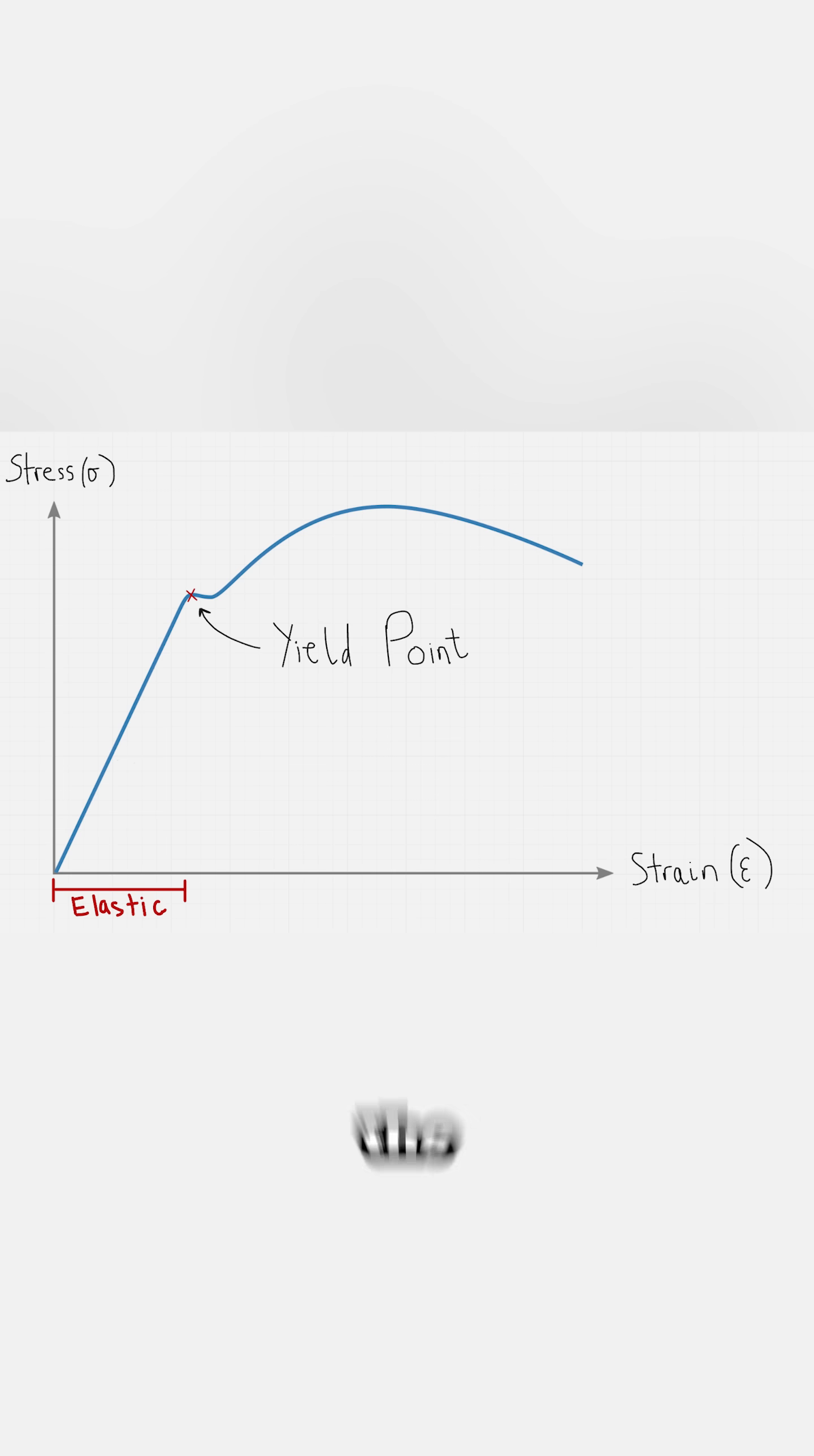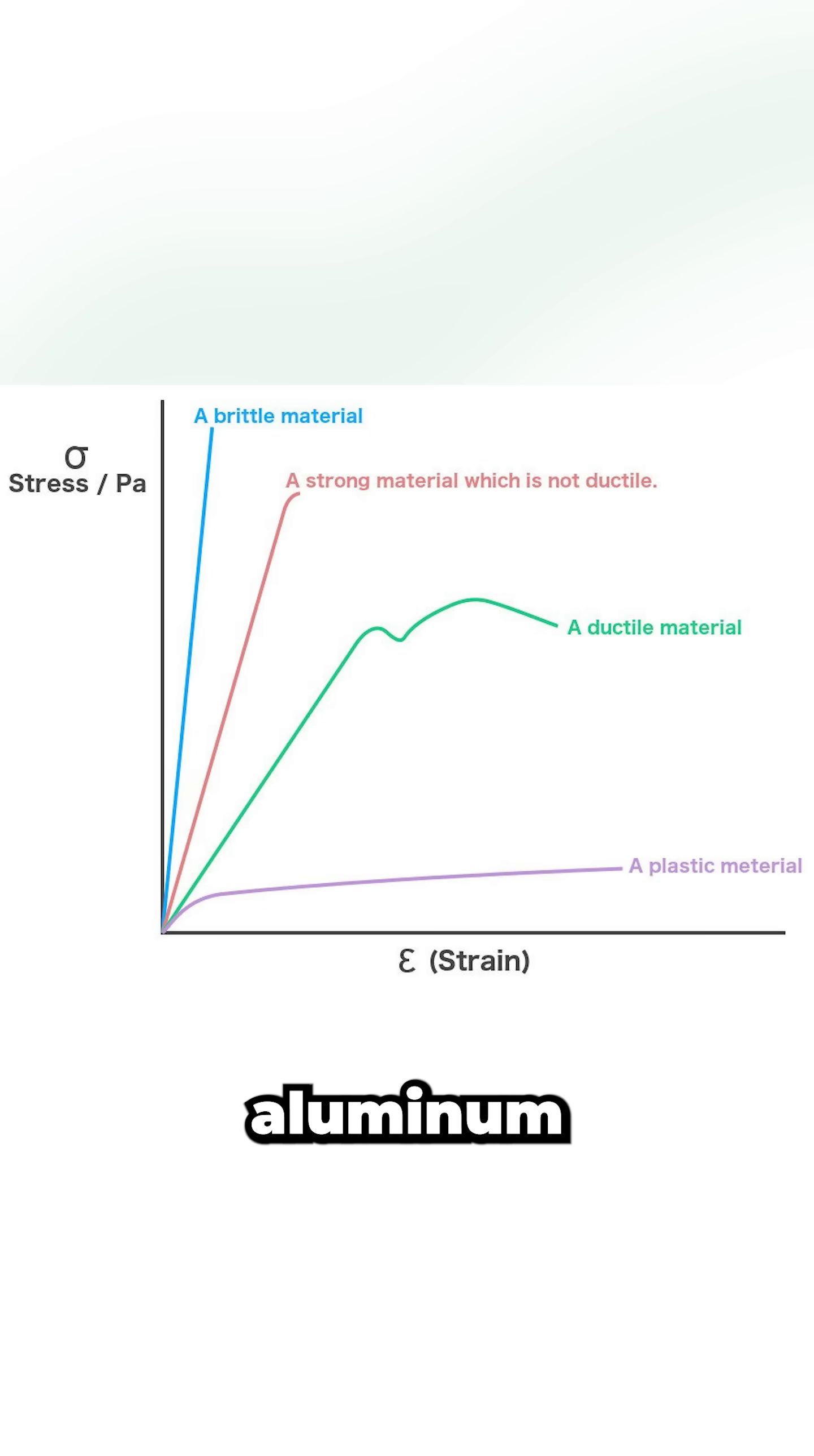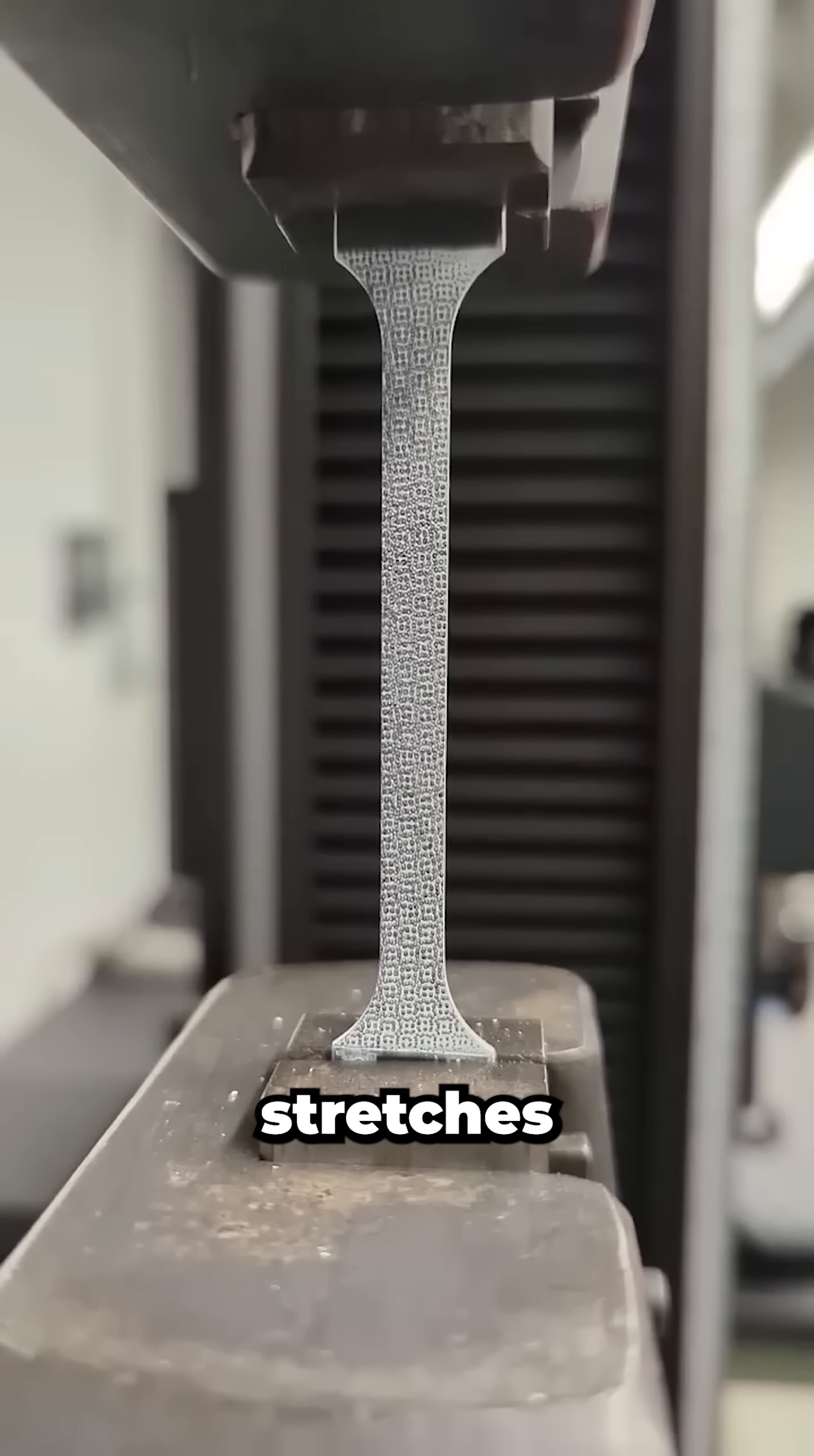Then comes the yield point, the point where the material starts to deform permanently. After this, ductile materials like aluminum or steel enter a strain hardening phase where the material actually gets stronger as it stretches.